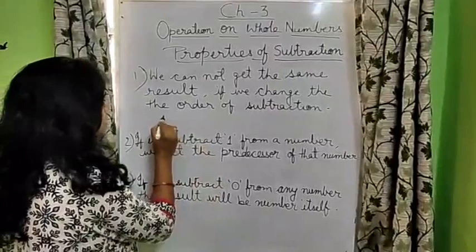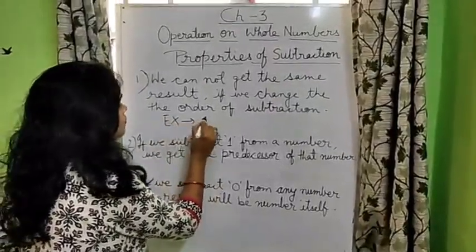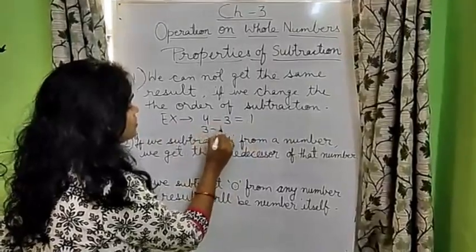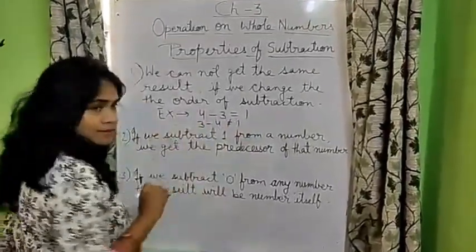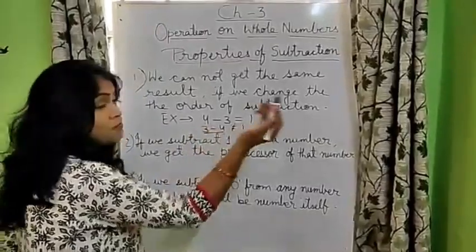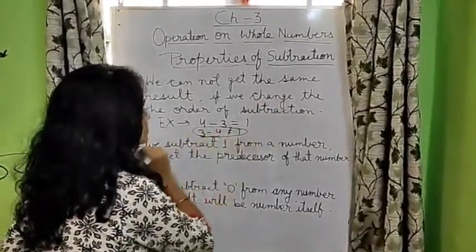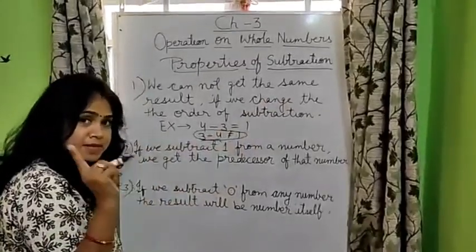For example, if I am writing, 4 minus 3 is equal to 1, then 3 minus 4 will not be equal to 1. Is it clear? Is it possible that 3 minus 4 will be 1? No. So, this condition is not true for subtraction.